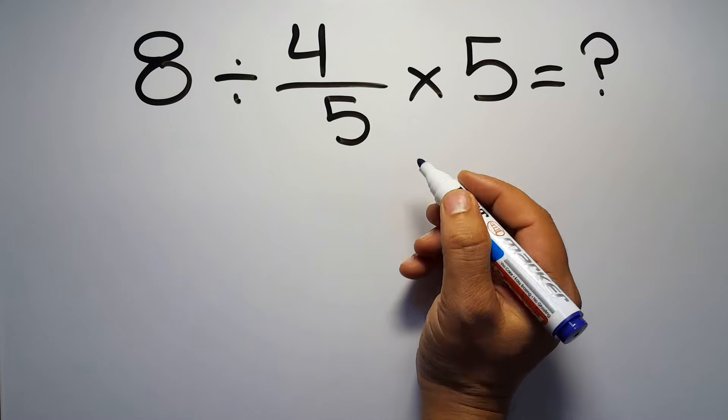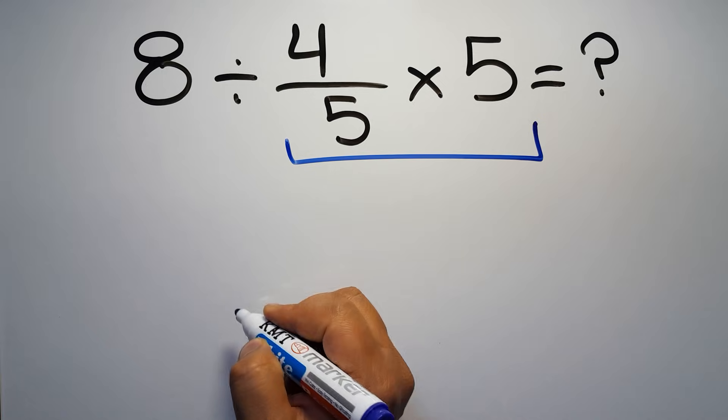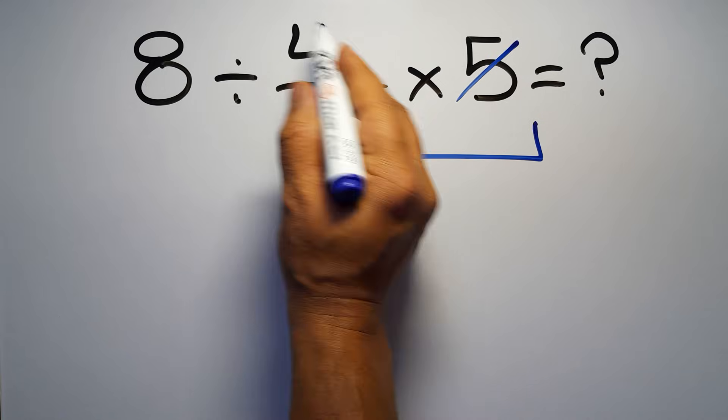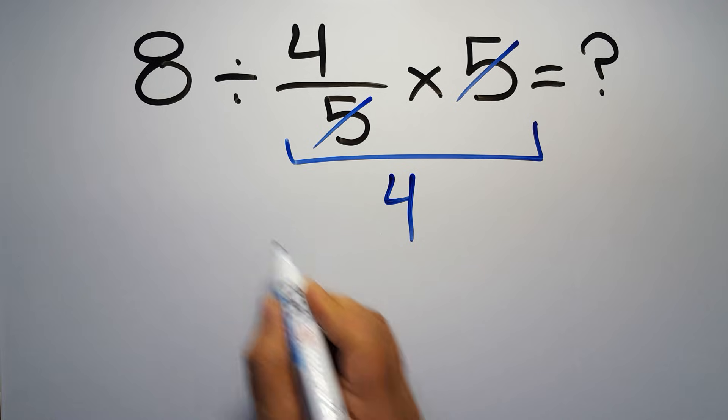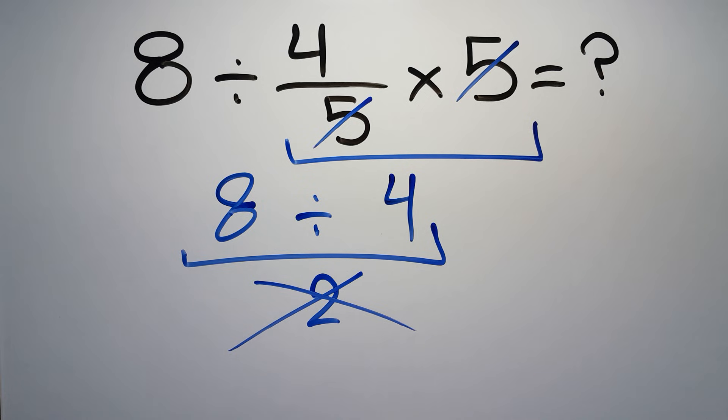First we do this multiplication: 4 over 5 times 5. We can easily cancel this 5 and this 5, so here we have just 4, and 8 divided by 4 gives us 2. But this answer is not correct because...